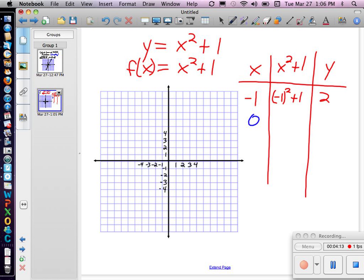I could plug in 0. So then we'd have 0 squared plus 1, and that would give me 1. And I could plug in a 1, and that would give me 1 or 2. So we could plug in all these different values. And so if we plugged in a 1, we'd get 2. And if we plugged in a 2, we'd get 5, and so on.